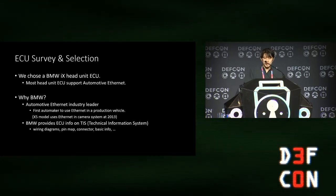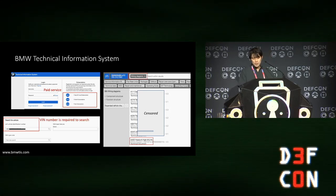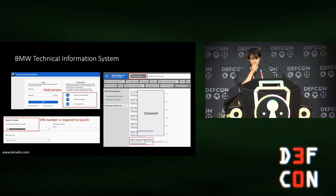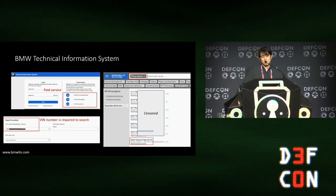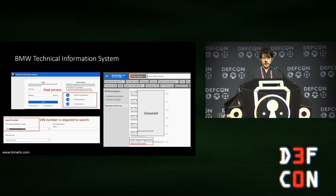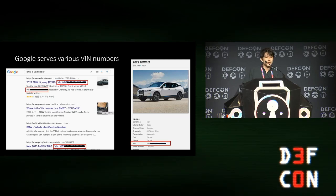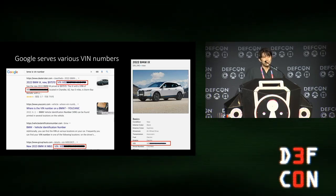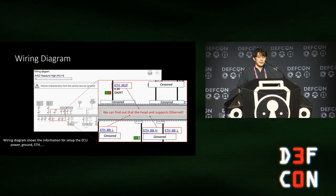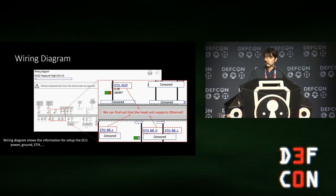We checked the wiring diagrams to verify that the head unit ECU supports automotive Ethernet. These are screenshots from the BMW TIS site, which is a paid service, so some parts are hidden. You can search data by pin number to find what you need. We found the wiring diagram for the head unit ECU and confirmed there is an Ethernet line in the diagram. If you don't have a BMW car to get the pin number, you can find it on Google.